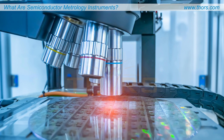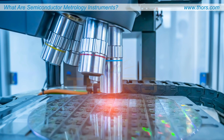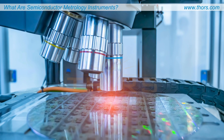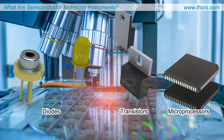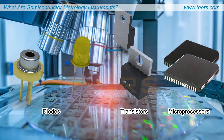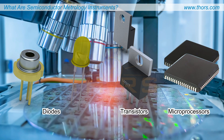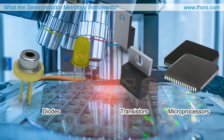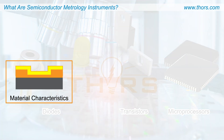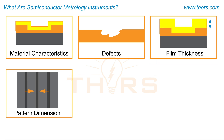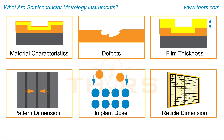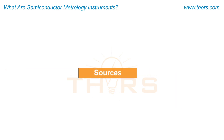Semiconductor Metrology employs various semiconductor metrology instruments to produce reliable semiconductor devices such as diodes, transistors, and microprocessors. Semiconductor Metrology instruments are designed to measure a wide range of parameters, characteristics, and defects related to deposited materials and various manufacturing processes used for manufacturing semiconductor devices.